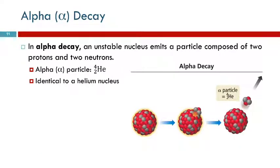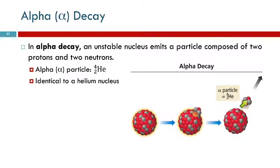In alpha decay, an alpha particle is emitted from the nucleus. An alpha particle is the same as a helium nucleus — helium-4 without any electrons. So it has two protons and two neutrons, but no electrons. It's not an atom, it's just the nucleus, and it can be spit out of the nucleus of a larger element. That's called alpha decay.